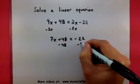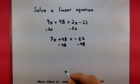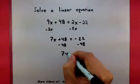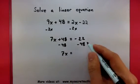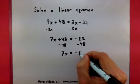I'll start by subtracting the 48. Okay, that will leave me with a 7x equals, looks like, a negative 70.